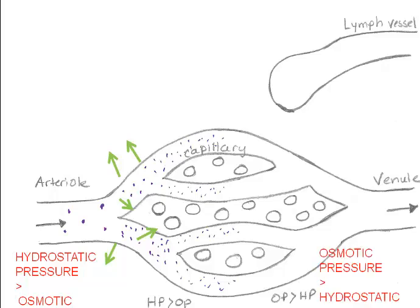At the capillary end, blood pressure is relatively low because blood has been diverted from the arterial to many capillaries. Osmotic pressure is relatively high — solute concentration is still high because fluid has been pushed out into the tissues at the arterial end. What's left behind in the capillaries is a high concentration of solutes that includes salt, plasma proteins, and blood cells. Because osmotic pressure is higher than blood pressure, fluid moves back into the capillaries.